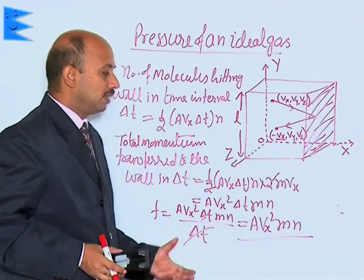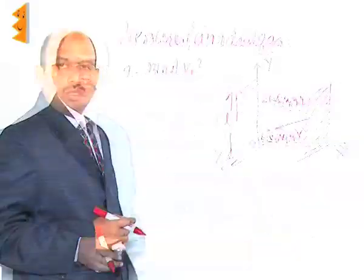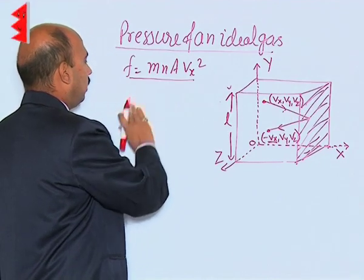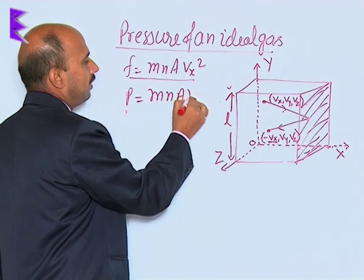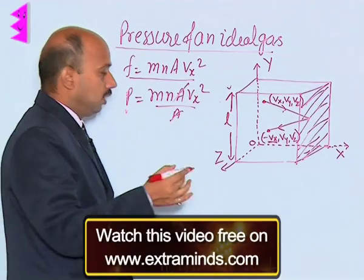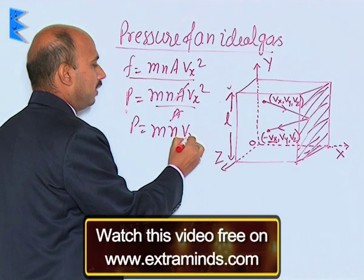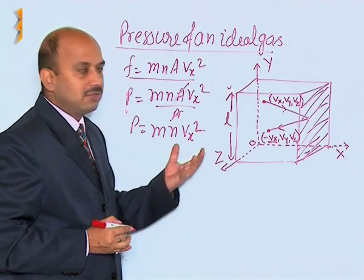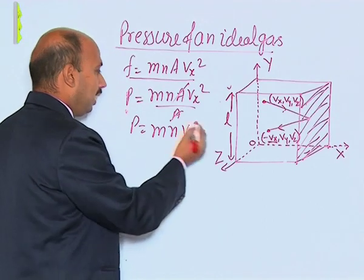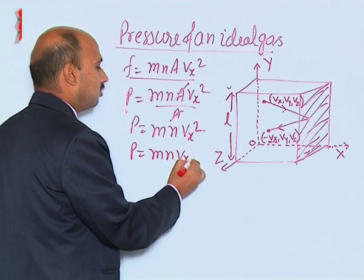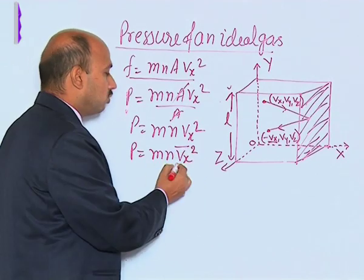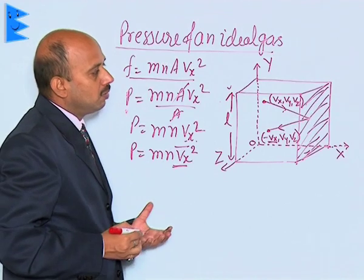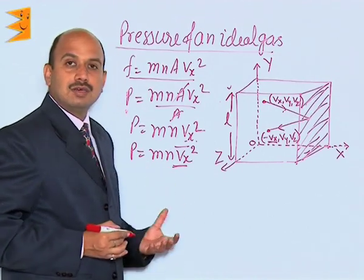This is the force exerted by the molecules on this wall. Pressure is equal to force divided by area: P = m n A Vx² / A, so P = m n Vx². Since all molecules are not having the same velocity, we take the average: P = m n ⟨Vx²⟩, where ⟨Vx²⟩ is the average of Vx squared due to the velocity distribution.